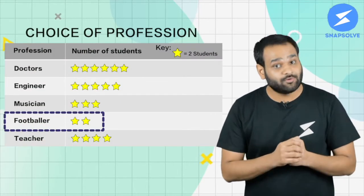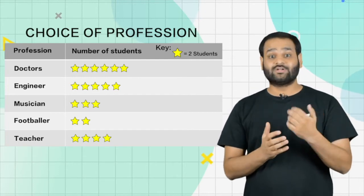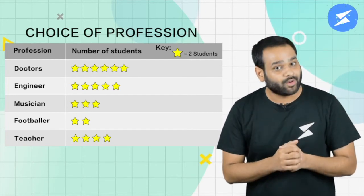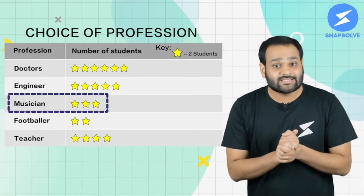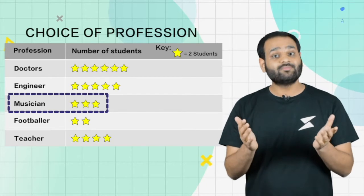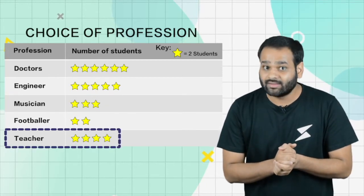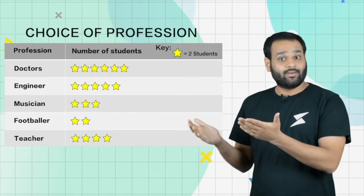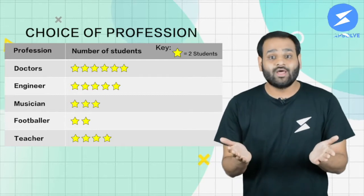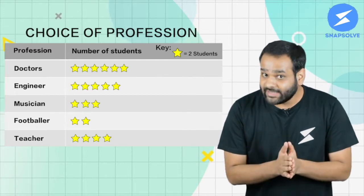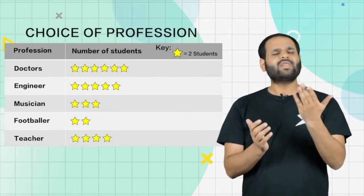Let's see what Reema finally did. Isn't this table easy to understand? There are two stars in front of the footballer, which means four students want to be a footballer. Similarly, six students want to be a musician, eight students want to be a teacher, and so on.